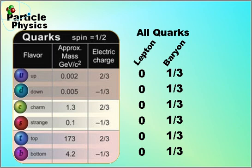Anti-quarks also have a lepton number of zero, but their baryon number is negative one third.